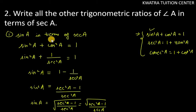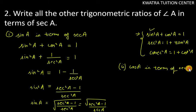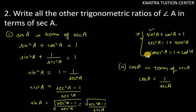That's the first result: sin A in terms of sec A. Next is cos A in terms of sec A. Since cos A is the reciprocal of sec A, we simply have cos A = 1/sec A.